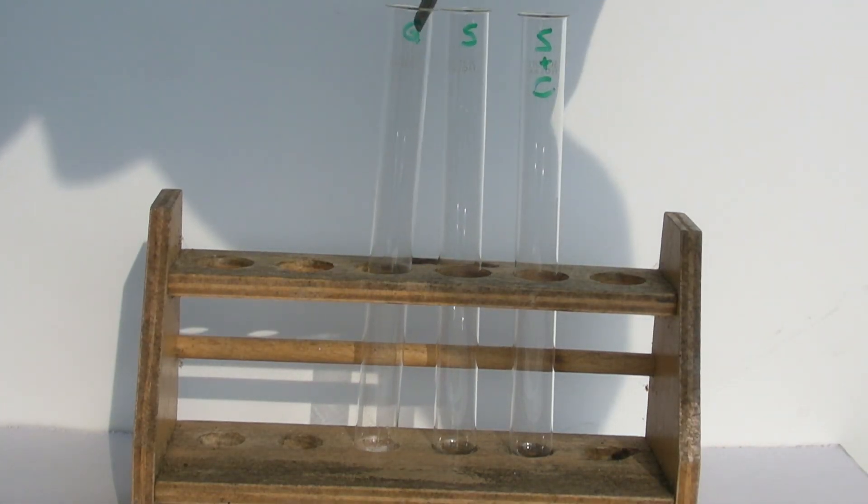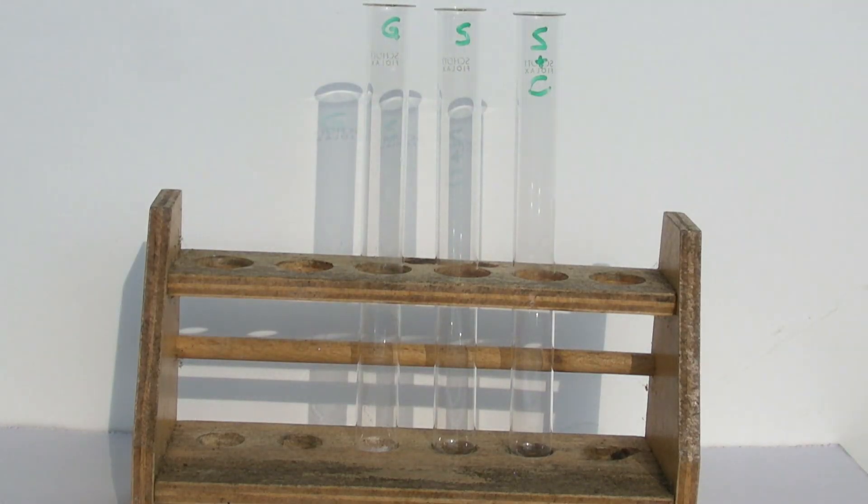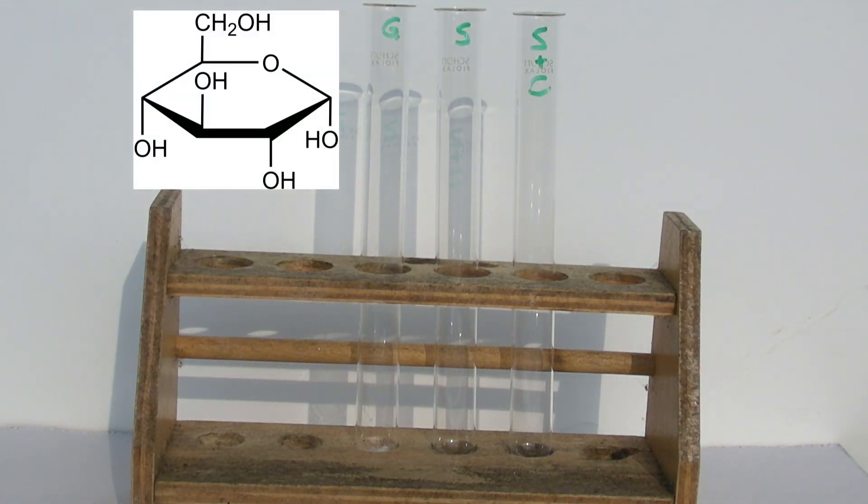Three test tubes are used. To the first one, some glucose is added. Sugars are also called saccharides. Glucose is a monosaccharide or single sugar.